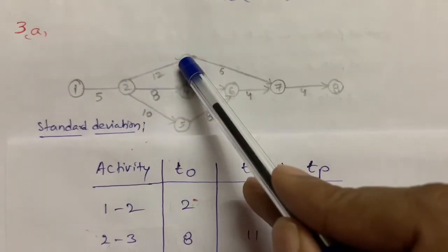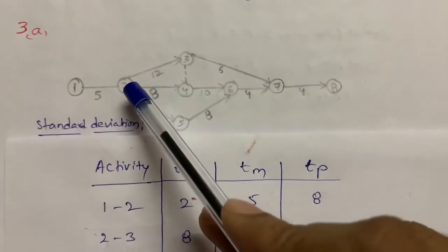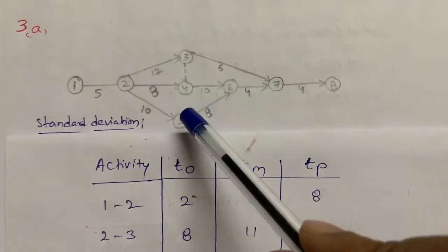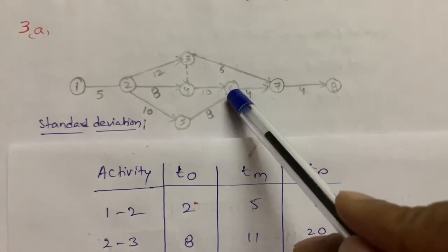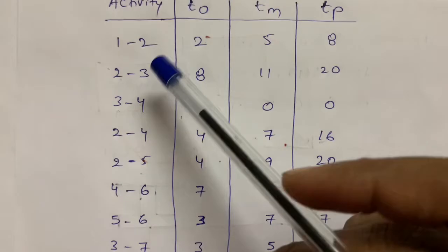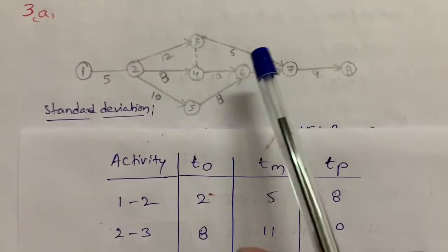After completion of 2 to 3, 3 to 7 activity is started. After completion of 2 to 4, 4 to 6 activity is started. After completion of 2 to 5, 5 to 6 was started. And after that, 6 to 7 and 7 to 8. By using these activities, we plotted this network diagram.